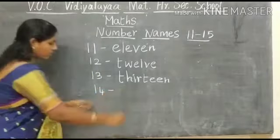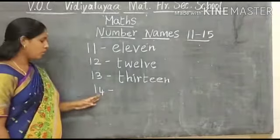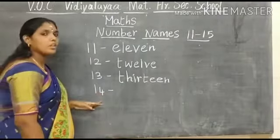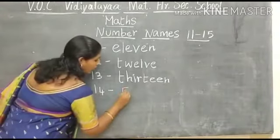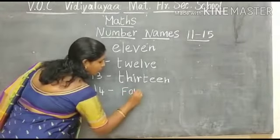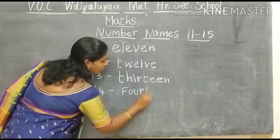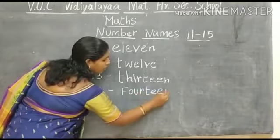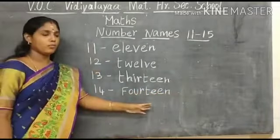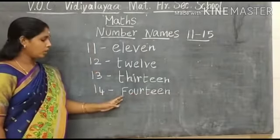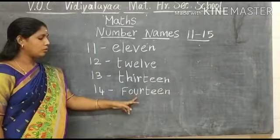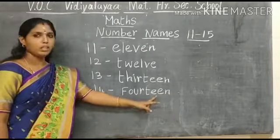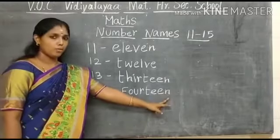What number is this? This is number 14. What is the spelling of number 14? F, O, U, R, T, E, E, N. 14. What is the spelling of number 14? F, O, U, R, T, E, E, N. 14.